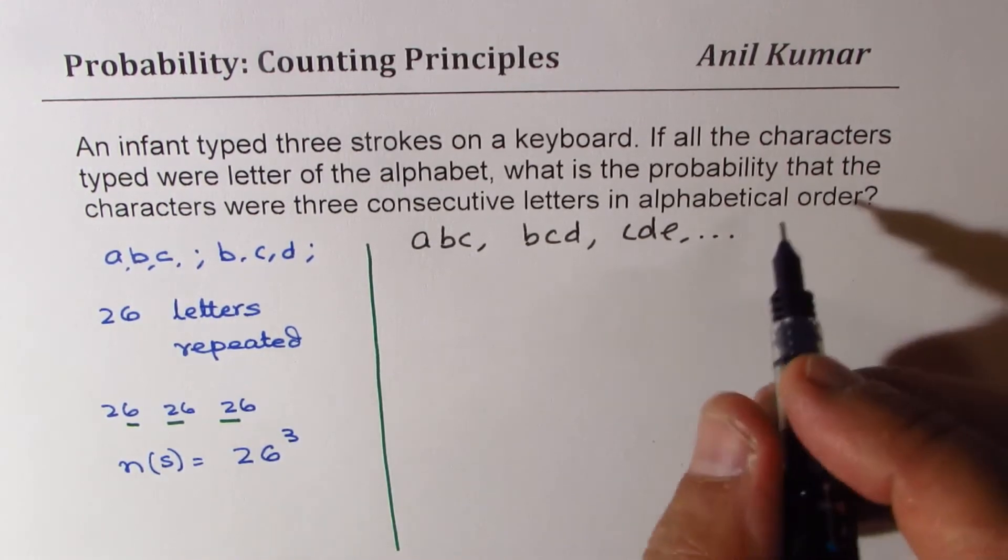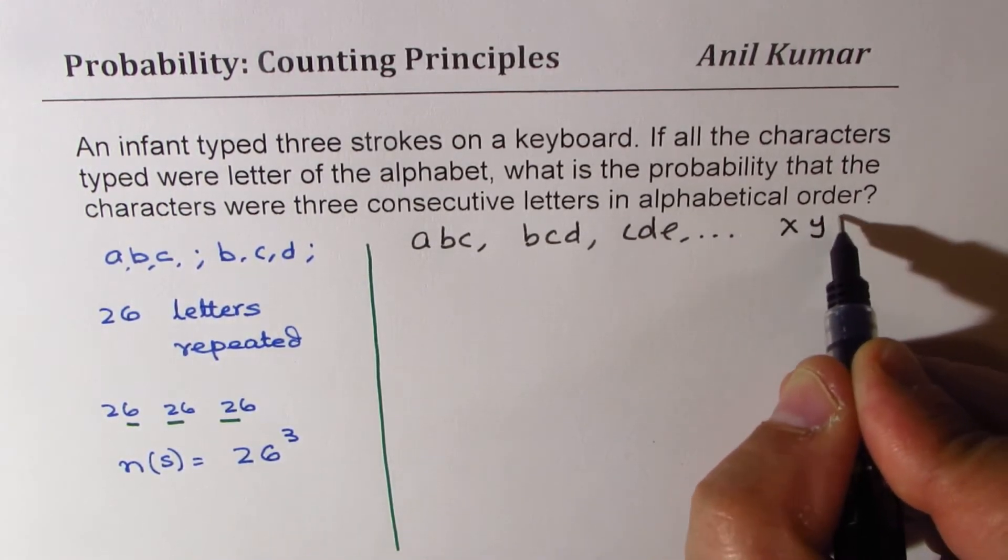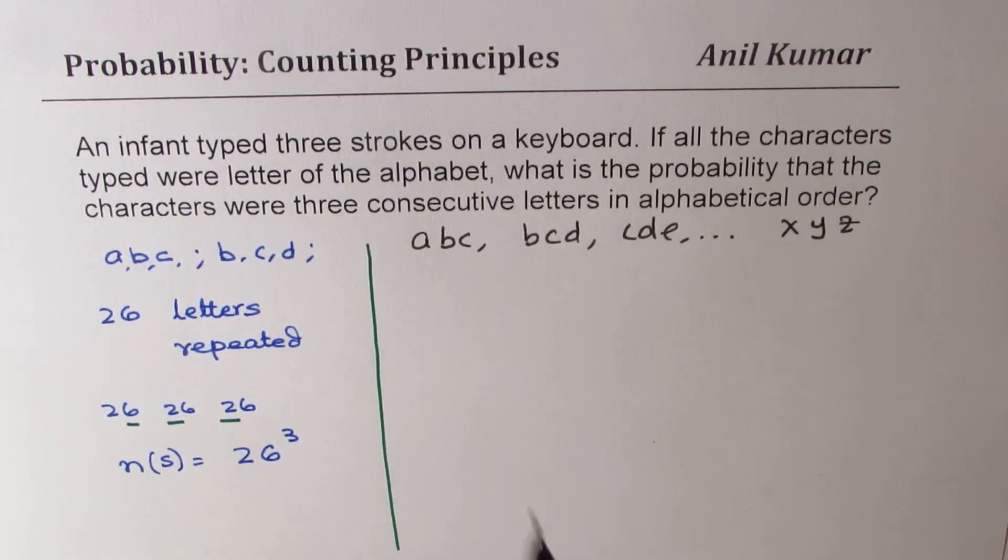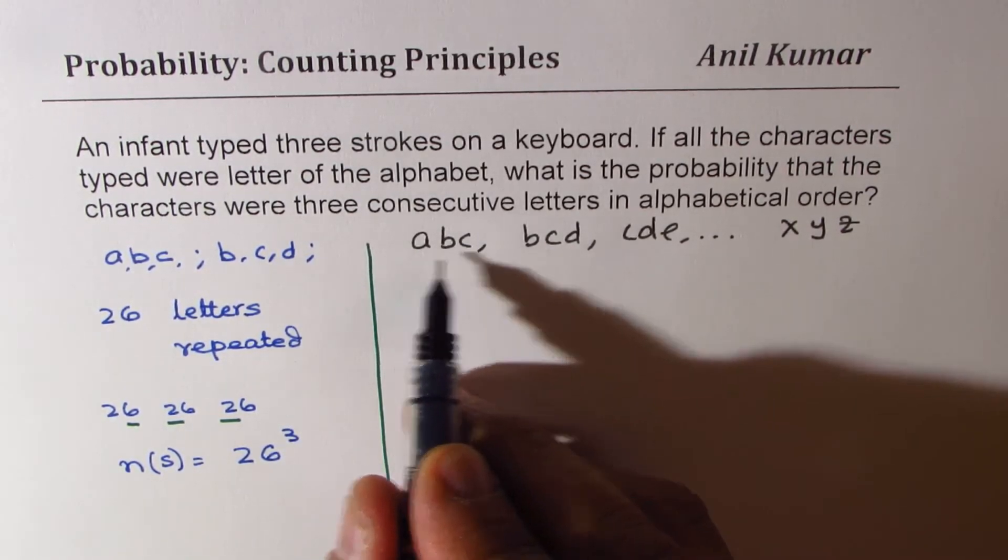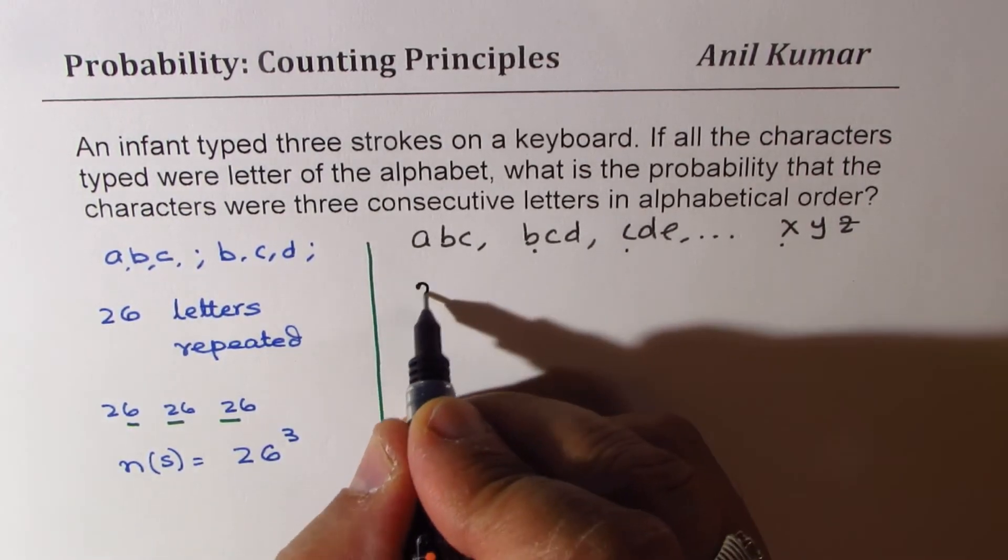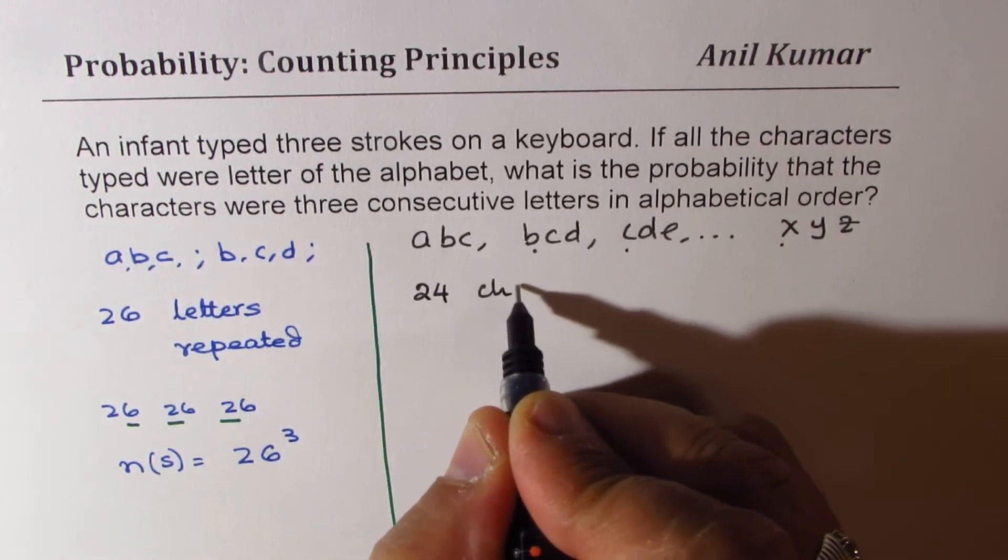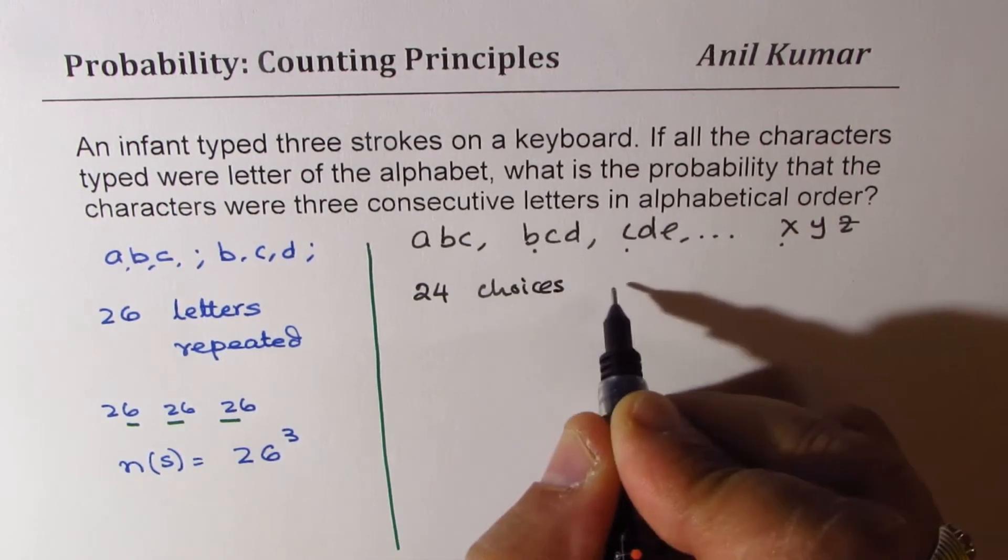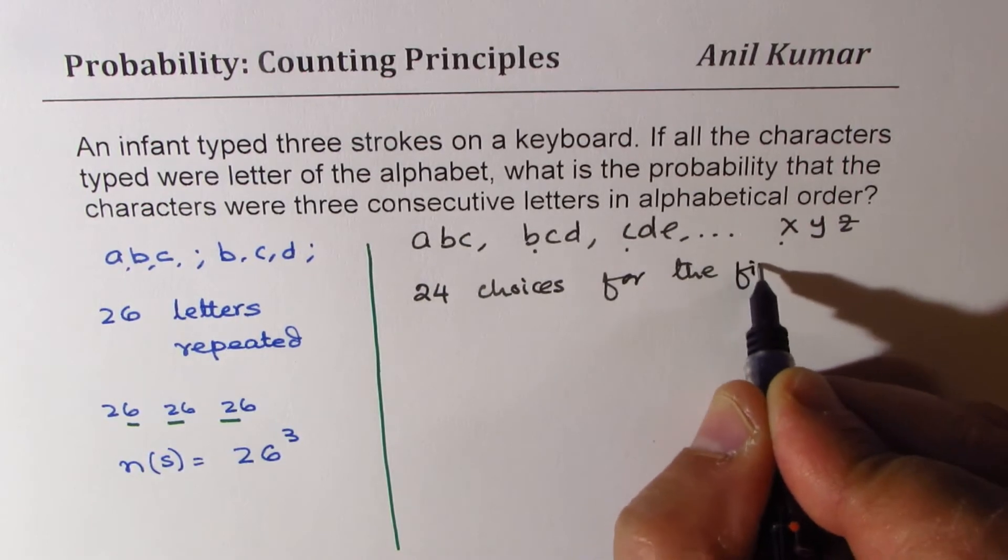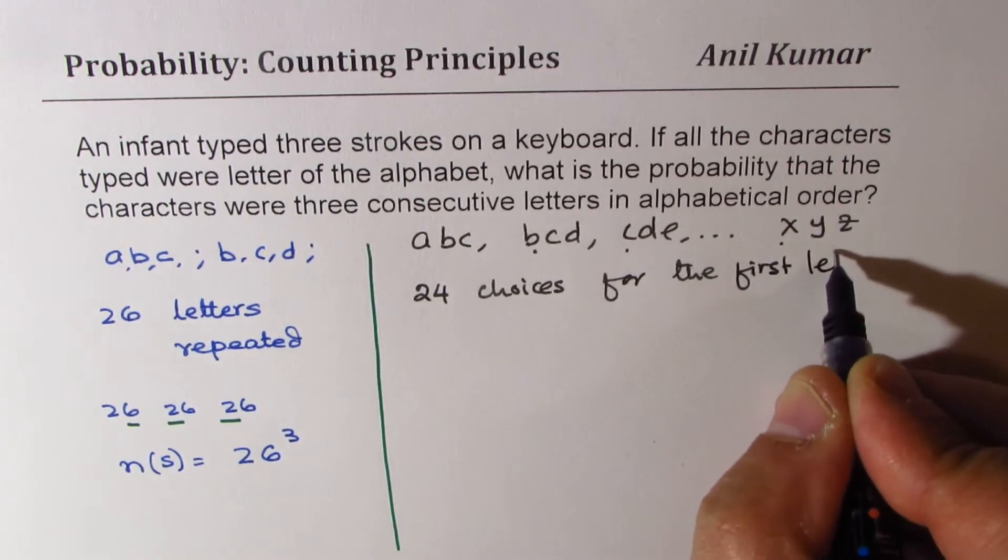you will notice that the last will be X, Y, Z. Now, if you consider this, that means the first letter could be only 24. So there could be only 24 choices for the first letter. Is that clear?